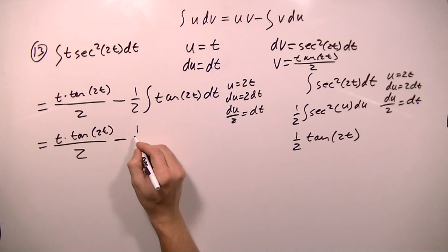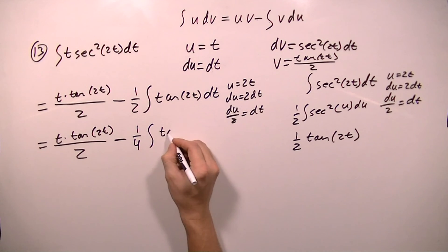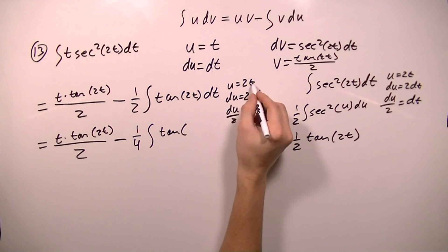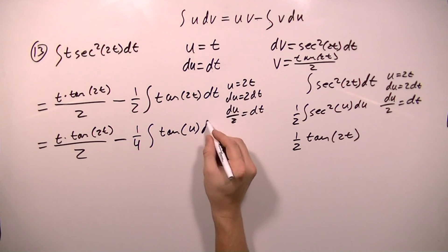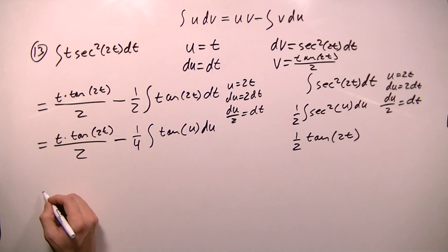And then I'm going to be taking the integral of tangent, and 2t is u. And the dt was the du over 2. So now I can take the integral of this,